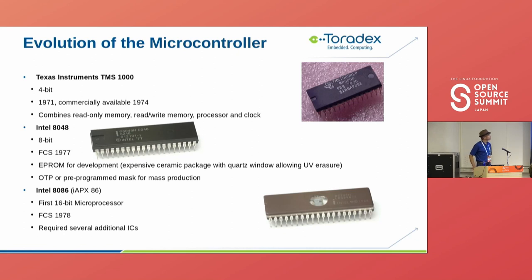The microcontroller basically started with the Texas Instruments TMS 1000, a 4-bit one in 1971, commercially available in 1974. This combined read-only memory and read-write memory all in a processor, including the clocks. Then Intel with the AT48, an 8-bit microcontroller that first shipped in 1977. It used EEPROM for development — usually quite expensive ceramic packages with a quartz window that you could erase with ultraviolet light. In production, usually a one-time programmable version was used.